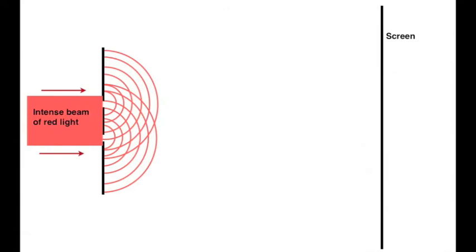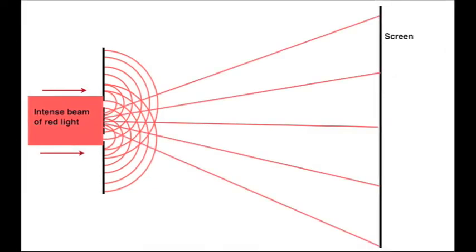Now, if light is made up of waves, then from these gaps in the barrier, we should have two sets of semicircular pattern waves. And from those two sets, we'd expect there to be overlap, to be interference, and those then to produce an interference pattern.